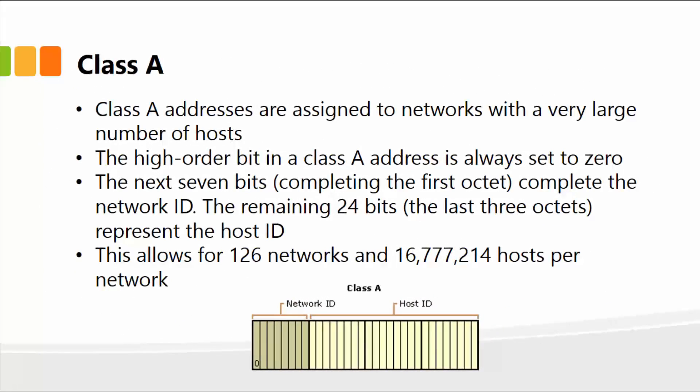Class A addresses are typically assigned to networks with a large number of hosts. The high order bit in a class A address is always set to zero. The next seven bits, completing the first octet, complete the network ID, and the remaining 24 bits — the last three octets — represent the host ID. This allows for about 126 networks and about 16,777,214 hosts per network.